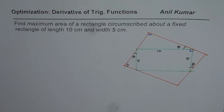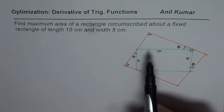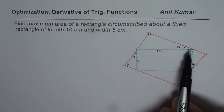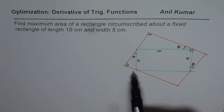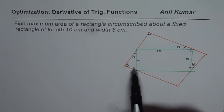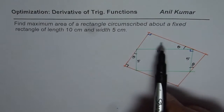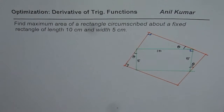The question is: find the maximum area of a rectangle circumscribed about a fixed rectangle of length 10 centimeters and width 5 centimeters. Here's a diagram. We are given a rectangle of length 10 and width 5, and this rectangle is circumscribing the original given rectangle. So we have a bigger rectangle outside. We need to find the maximum area of this big rectangle.